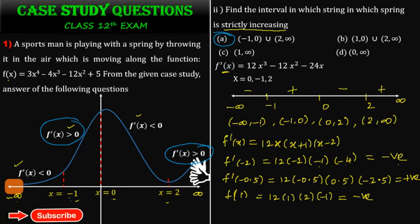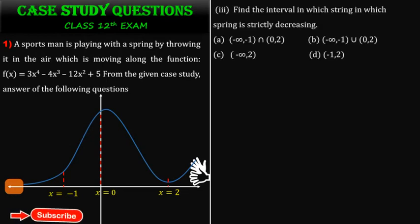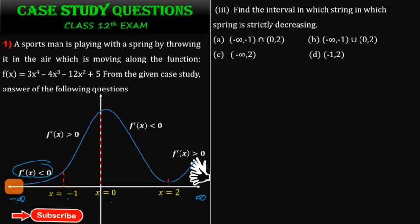The string is strictly increasing on the intervals (-1, 0) and (2, ∞). Third question: find the interval in which the string is strictly decreasing. Using the same analysis, f'(x) < 0 on (-∞, -1) and (0, 2). Therefore the curve is strictly decreasing on (-∞, -1) and (0, 2). The answer is option B.